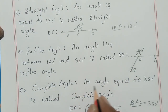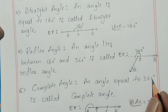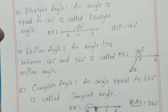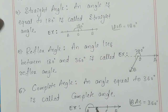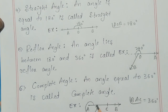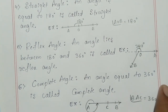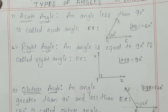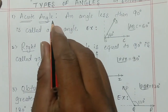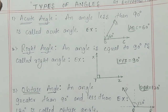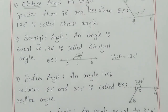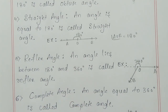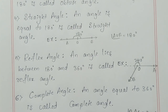Next is complete angle. An angle equal to 360 degrees is called a complete angle — one full rotation is called a complete angle. So in total there are six types of angles: acute angle, right angle, obtuse angle, straight angle, reflex angle, and complete angle. I hope you understood these types of angles.